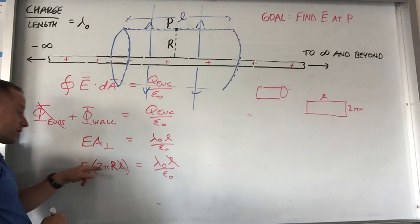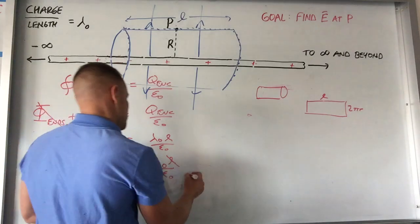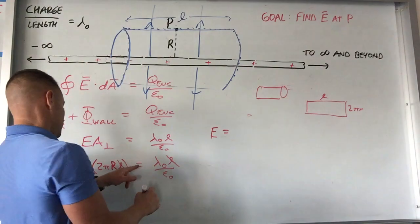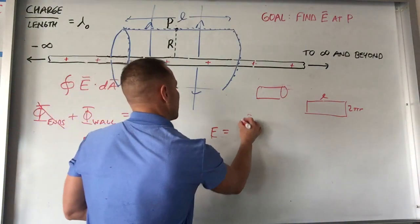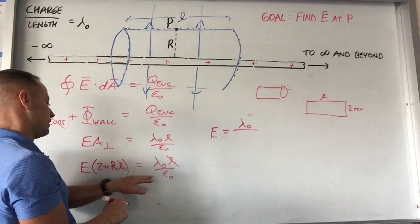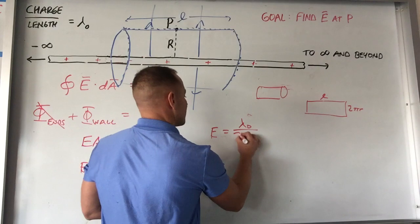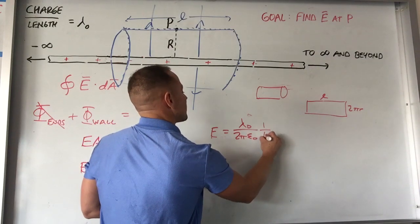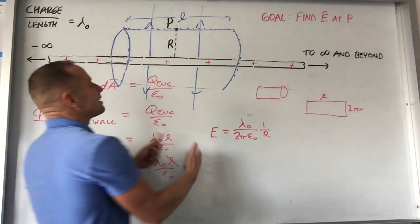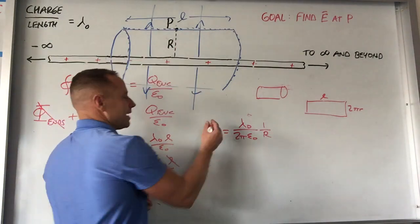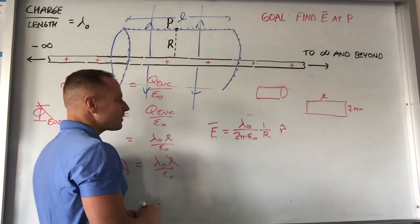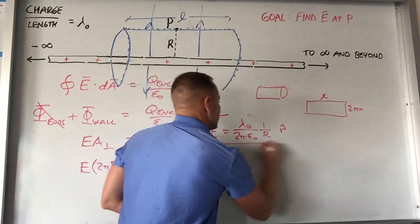And then all we got to do to solve for the field is divide over. So what I'm doing is separating kind of the R dependence. So it falls off like one over R. What people will tend to do to vectorize it like is just say that it points radially away. So you can just say it's a vector and it kind of points like radially away. So that's the field around a wire.